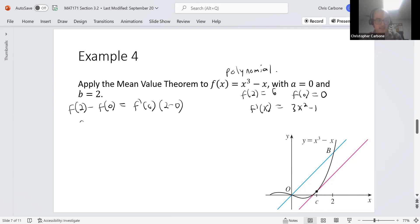So we can solve this as 6 = (3c² - 1) × 2, which is 6c² - 2.